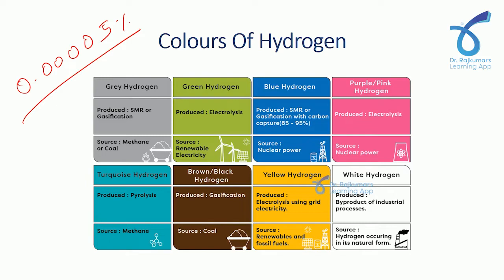We have different colors of Hydrogen: gray, green, blue, purple, turquoise, brown, yellow, and white. Why so many colors? The colors signify the production method of Hydrogen and the electricity source. For example, gray hydrogen signifies that the source is methane or coal, and it is produced by gasification.